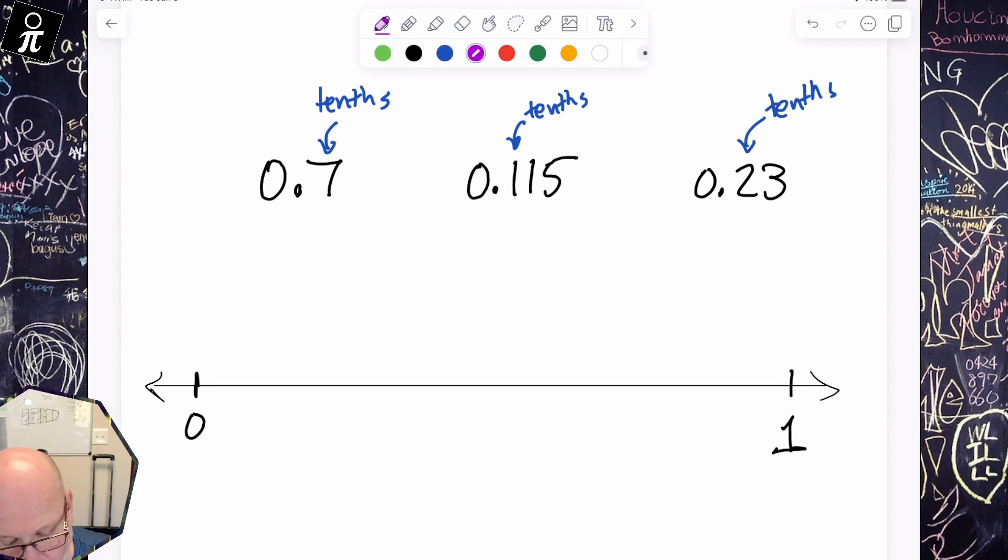So I'm going to start by estimating half. And we know that half is 0.5, so five tenths, five out of those 10 pieces. And then I'm going to just guesstimate my five intervals on the left: one, two, three, four, five. And then again, five intervals on the right.